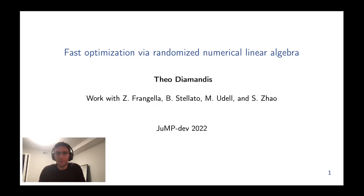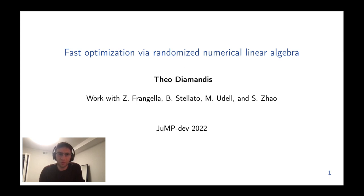Hi everyone, my name is Theo. I'm a PhD student in the Julia lab at MIT, and this talk is going to be about how we can pull some techniques from randomized numerical linear algebra into the world of optimization and use them to significantly speed up solvers. This is joint work with Zach, Bartolomeo, Madeline, and Shipu.